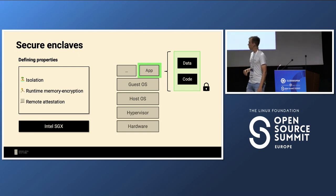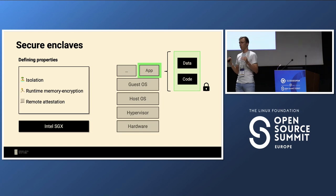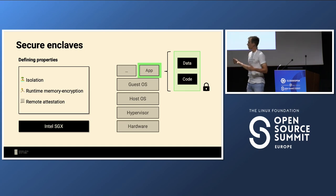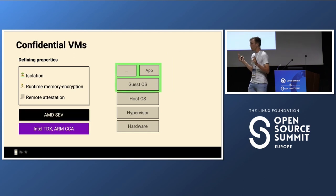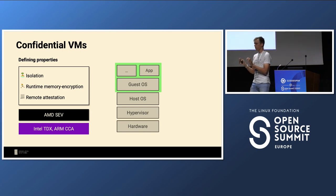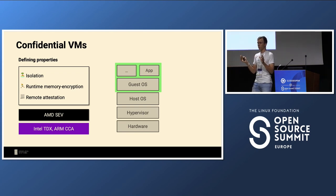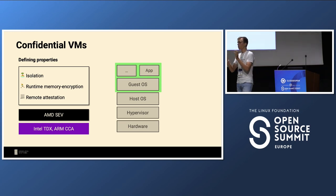Instead of lift-and-shift you either need to adapt your application or use a compatibility layer like a library OS — think of something like Wine emulation in Linux. So: small context but no real lift-and-shift. The next generation now isolates not a process but an entire VM by cutting off above the hypervisor, so the guest OS is also part of that confidential context, which means applications have a full system interface and a better lift-and-shift experience.